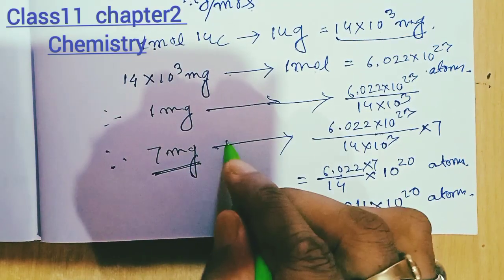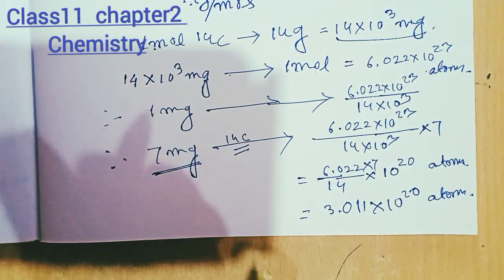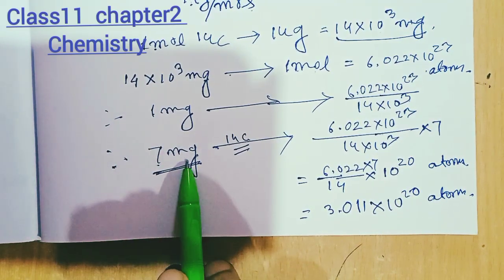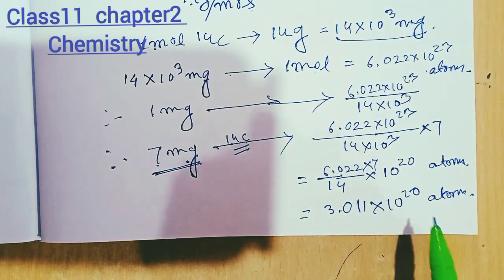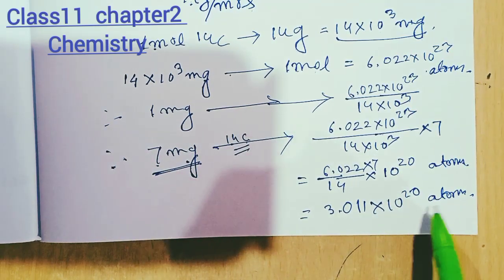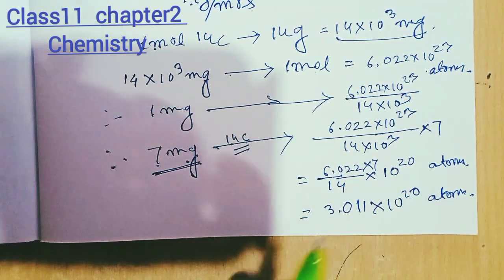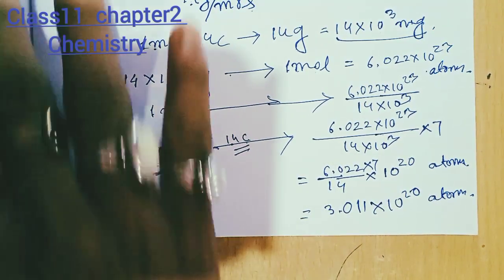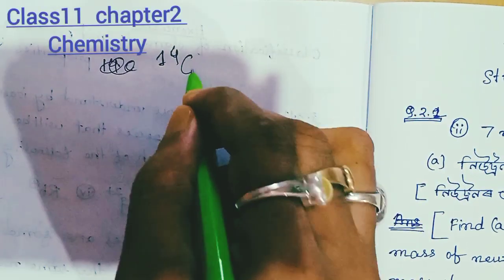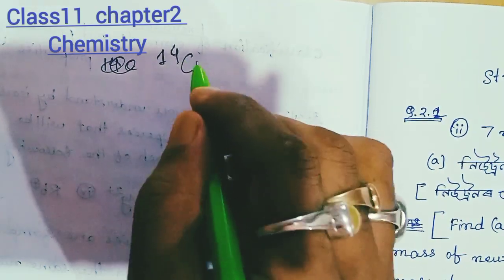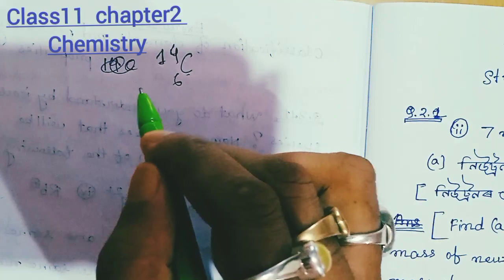So we have approximately 5 mg of Carbon-14 in this step. This is Carbon-14, and we continue with the Carbon-14 analysis. This is Carbon-14 with atomic number 6 and mass number 14.